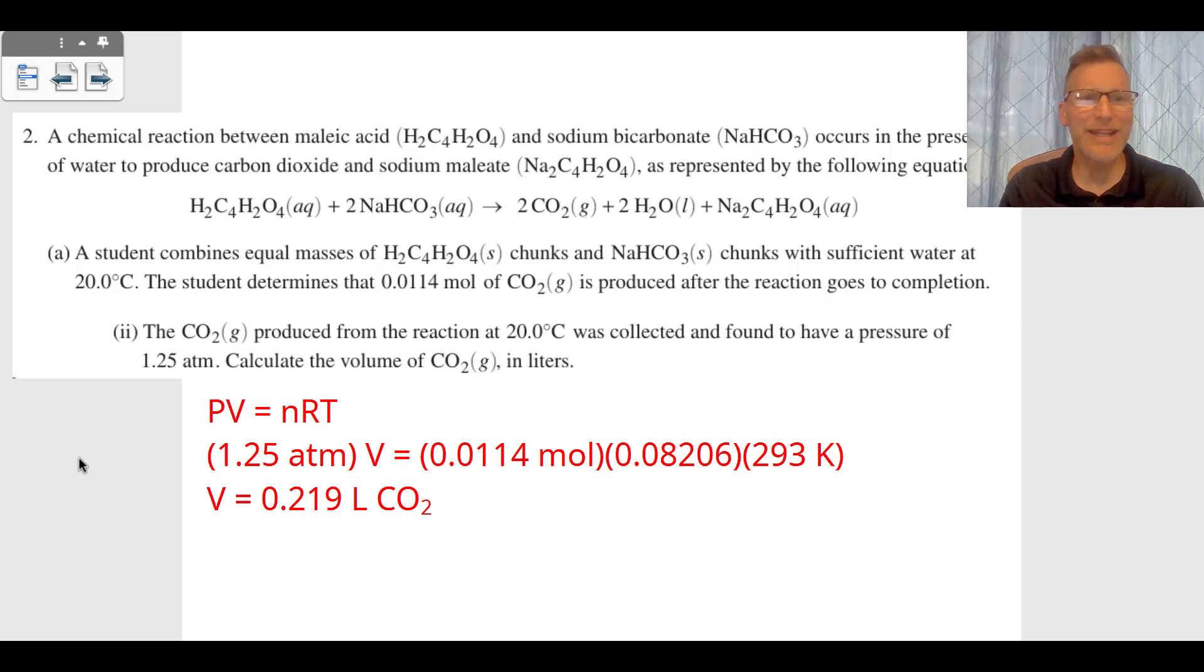Then we get to A2, which says we have a pressure of CO₂ gas of 1.25 atmospheres. The reaction is at 20.0°C and we want to know the volume of this gas, which means we're going to use PV=nRT, the ideal gas law.